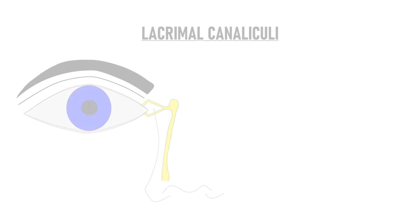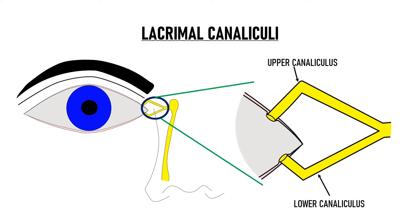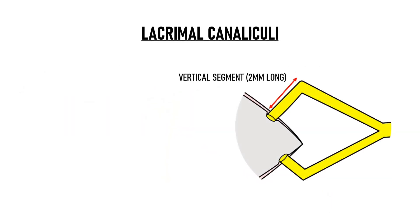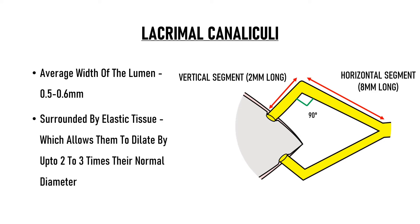The lacrimal puncta lead to the lacrimal canaliculi. There are two canaliculi: an upper canaliculus and a lower canaliculus. Each canaliculus has a vertical segment which is about 2 mm long and a horizontal segment which is about 8 mm long. These two segments make an angle of 90 degrees with each other. The average width of their lumen is only about 0.5 to 0.6 mm, but the canaliculi are surrounded by elastic tissue which allows them to dilate by up to 2 to 3 times their normal diameter.